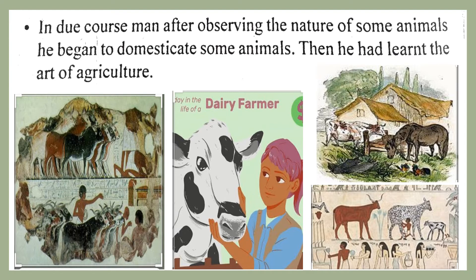Humans who had been hunting animals began to observe their nature, food habits, and the way these animals multiplied. Over a period of time, they captured some of these animals and brought them up — they started to domesticate these animals. In this way, animal husbandry and dairying started.